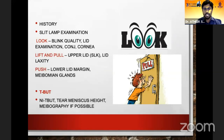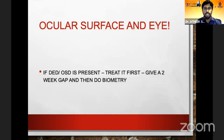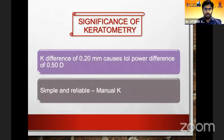TBUT is a very important test which gives us a lot of clues regarding when and how to do the ocular surface and astigmatism evaluation. Newer devices like meibography, if accessible, are added advantages. Together, these tools help us decide whether we can proceed with astigmatism evaluation or whether we need to delay it.